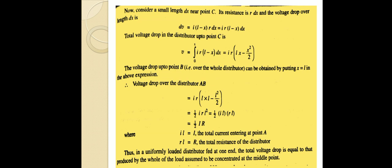Evaluating the integral: V equals IR into (Lx minus x squared by 2). The total voltage drop up to point B can be obtained by putting x equal to L. Therefore, the voltage drop over the distributor AB equals IR substituting x equal to L, giving IR into (L squared minus L squared by 2).